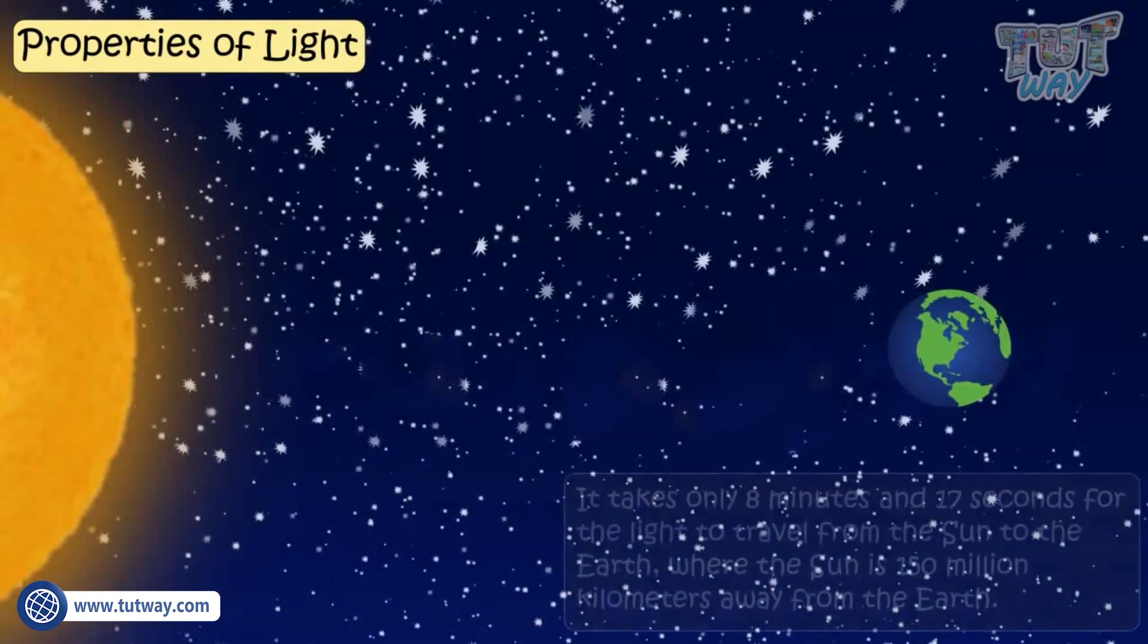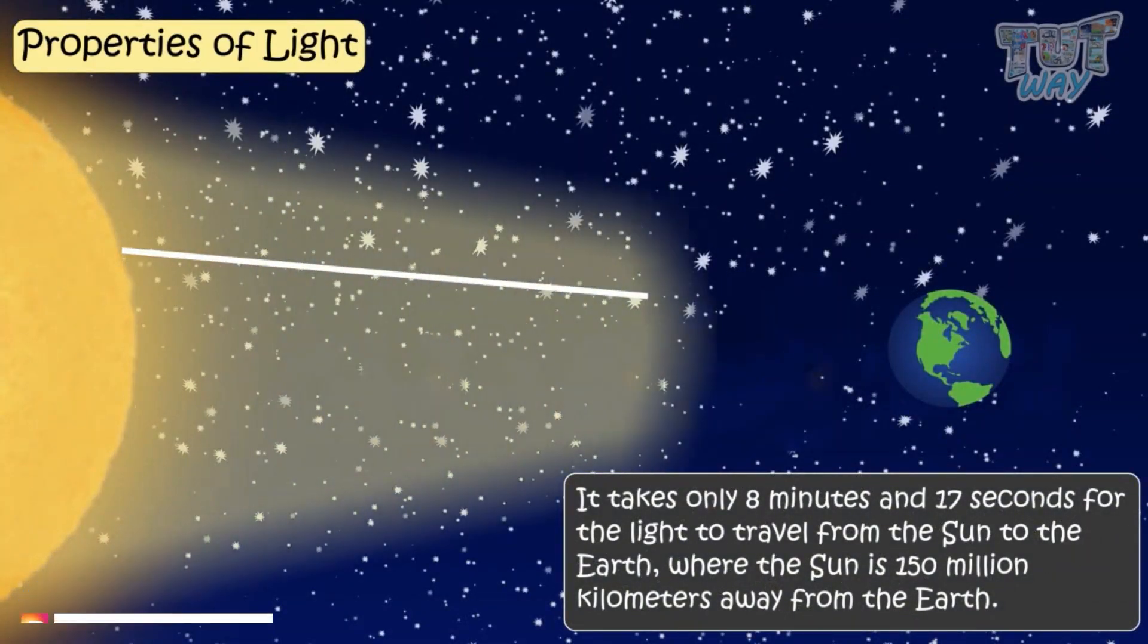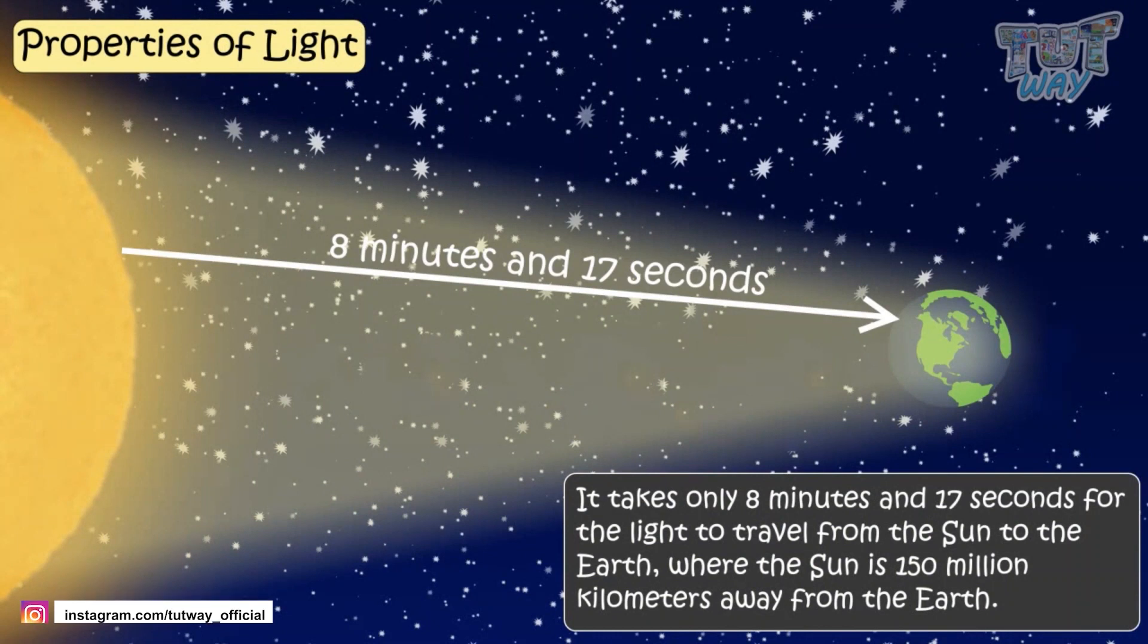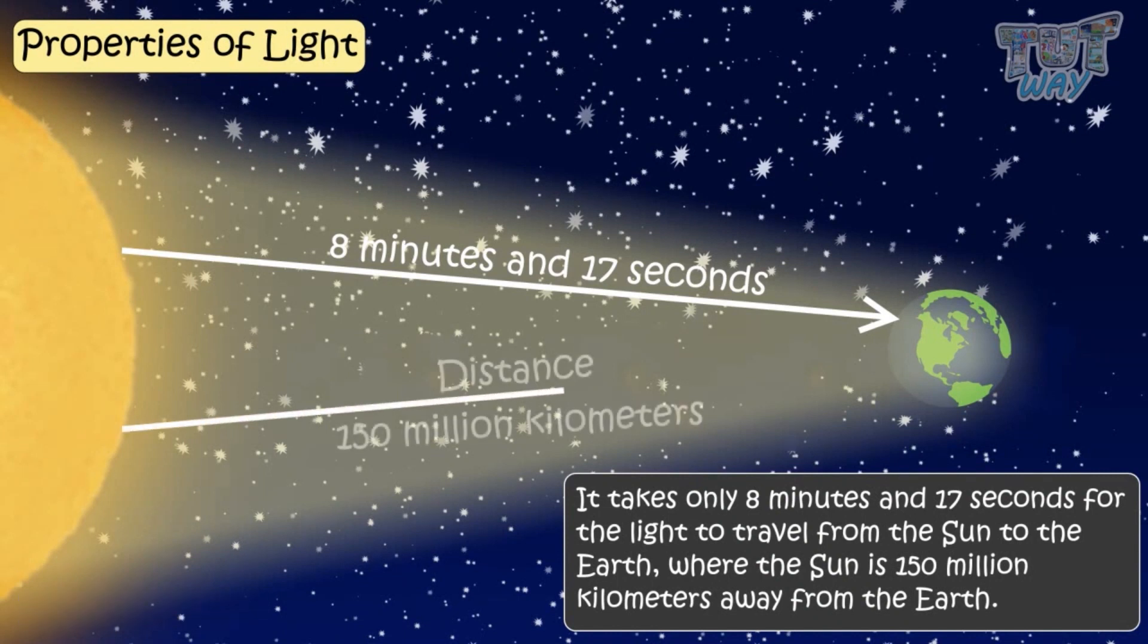It takes only 8 minutes and 17 seconds for the light to travel from the Sun to the Earth, where the Sun is 150 million kilometers away from the Earth.